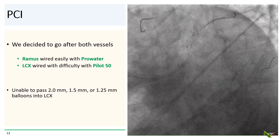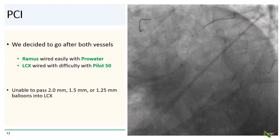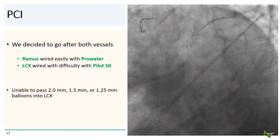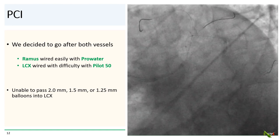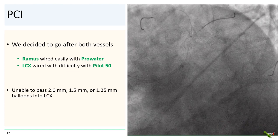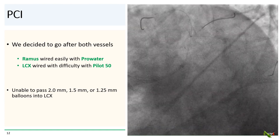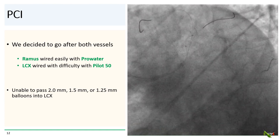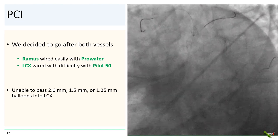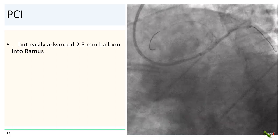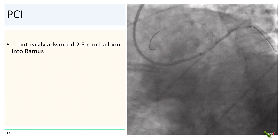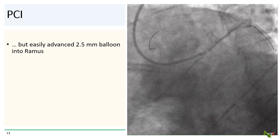We decided to go after both vessels. The ramus wired quite easily with the Pearlwater wire. The circ had sharper angulation but was eventually successfully wired with a hydrophilic wire. We next planned to do kissing angioplasty in the ramus and circ, but we were unable to pass any equipment into the circ, including a 1.25 millimeter balloon. So we turned to the ramus, and a 2.5 millimeter balloon easily advanced into the vessel. We dilated the ramus, thinking that dilation here would change the trifurcation geometry enough to allow us to pass a balloon into the circ for kissing angioplasty.